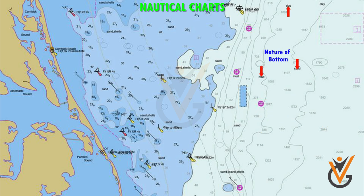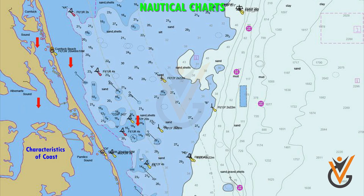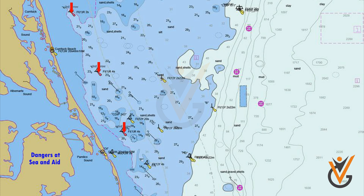Nautical charts also provide information on the nature of the bottom, elevation of places and their heights, characteristics of the coast, and dangers at sea and aids to navigation, assisting mariners in executing safe navigation.